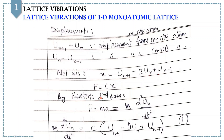Using Newton's second law, replacing F by MA — which equals M times the second derivative of U_N with respect to time — we can write: M d²U_N/dt² equals C into (U_{N+1} minus 2U_N plus U_{N-1}). Suppose this is equation number 1.